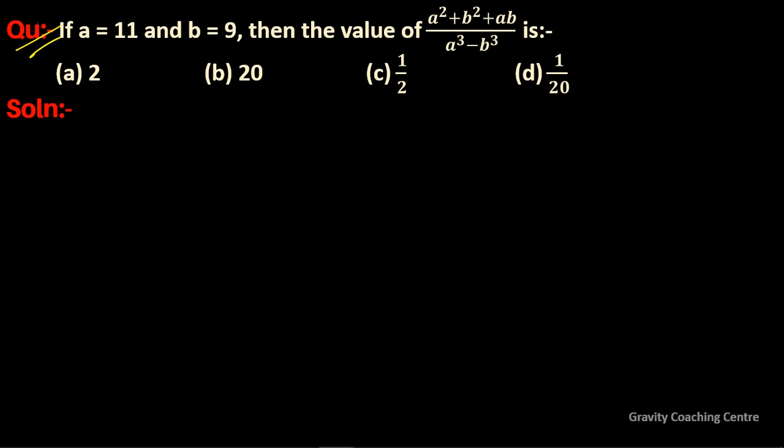Question: if a equals 11 and b equals 9, then find the value of (a² + b² + ab) / (a³ - b³). Here a ki value 11 aur b ki value 9 hai, so find karna hai.